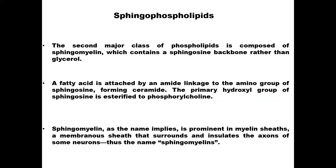So what are sphingophospholipids? They are the second major class of phospholipids that are composed of sphingomyelin. Sphingomyelin contains a sphingosine backbone rather than glycerol, and we have seen the structure of sphingosine.